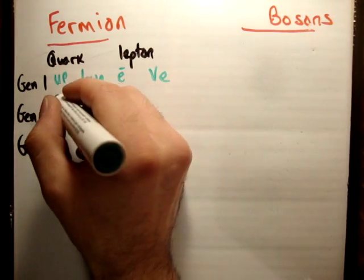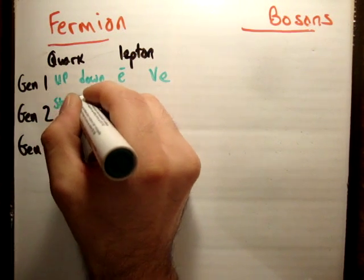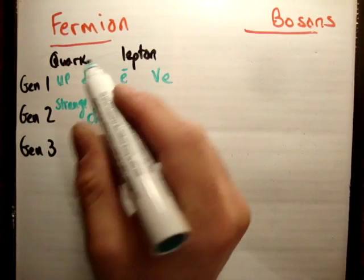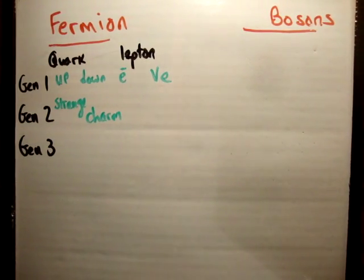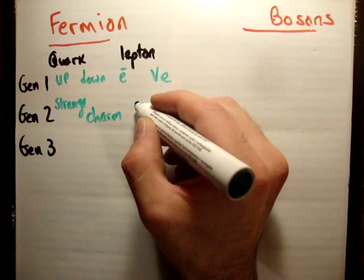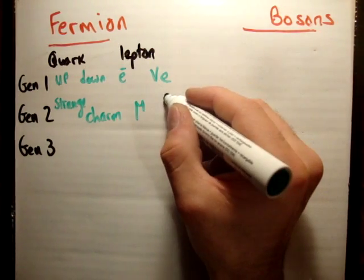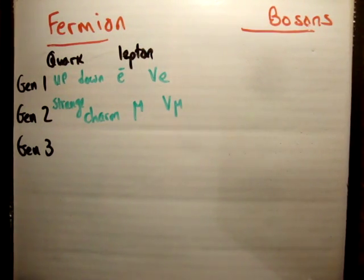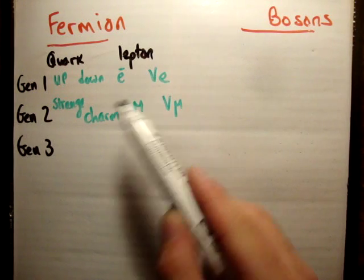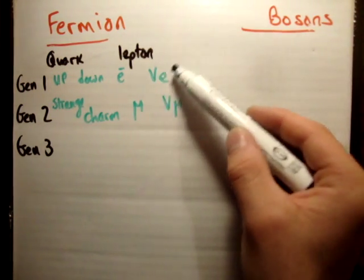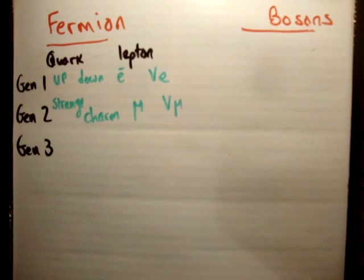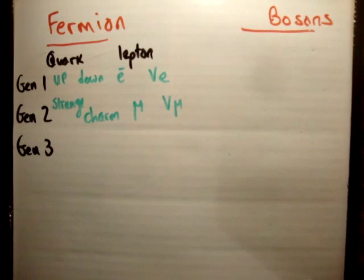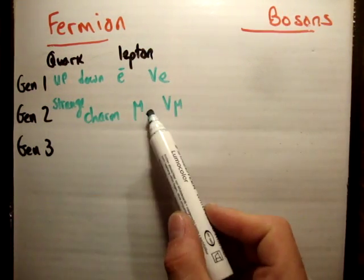So the particles we get now are the strange quark and the charm quark. And when you write them, I'll say staggered like this because I don't have a lot of room. And we have the mu, and we have the mu neutrino. Okay? So at higher energy levels, your electrons become mu particles, and your electron neutrinos become mu neutrinos. Your quarks, you have two new quarks, called the strange quark and the charm quark. And these are higher energy levels than generation 1.